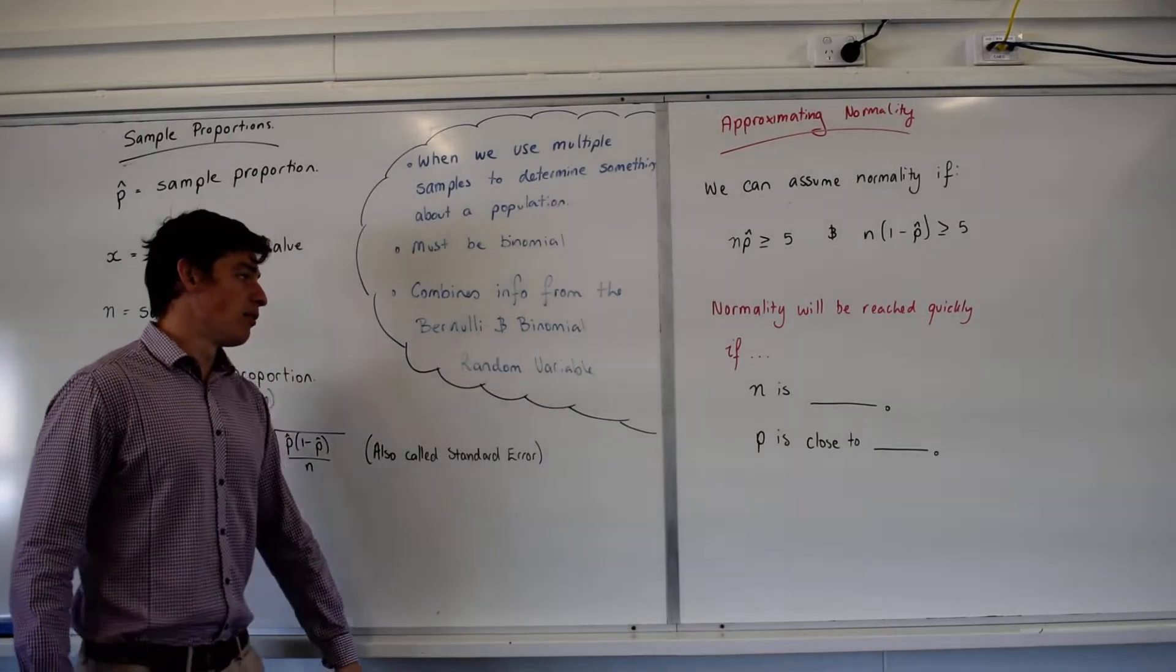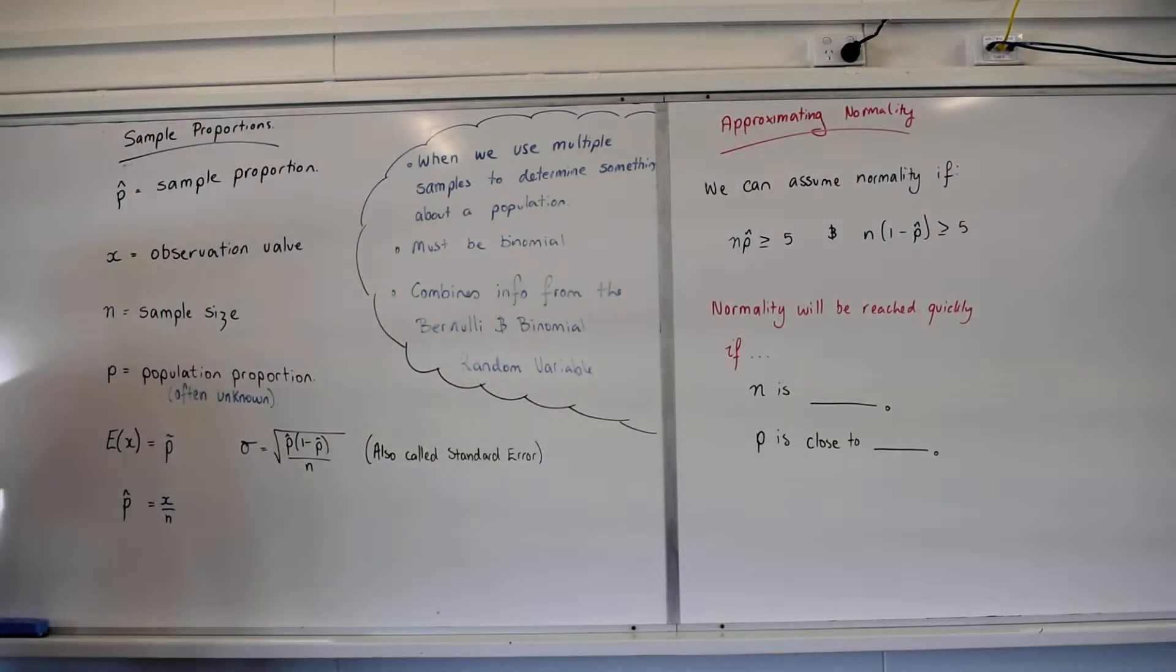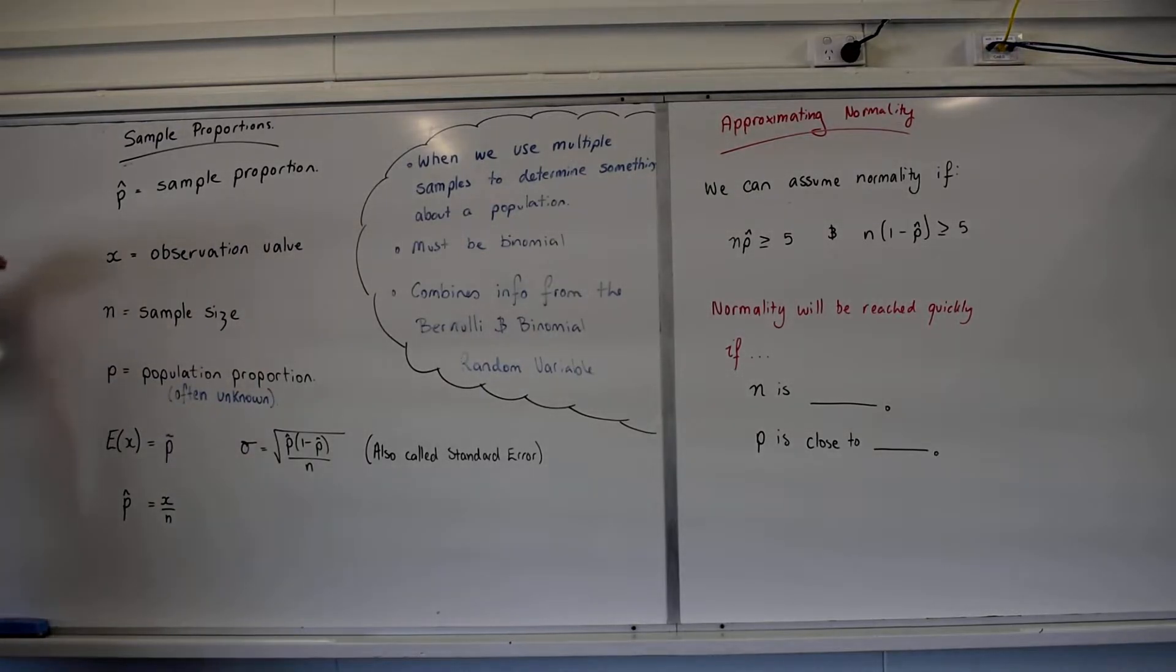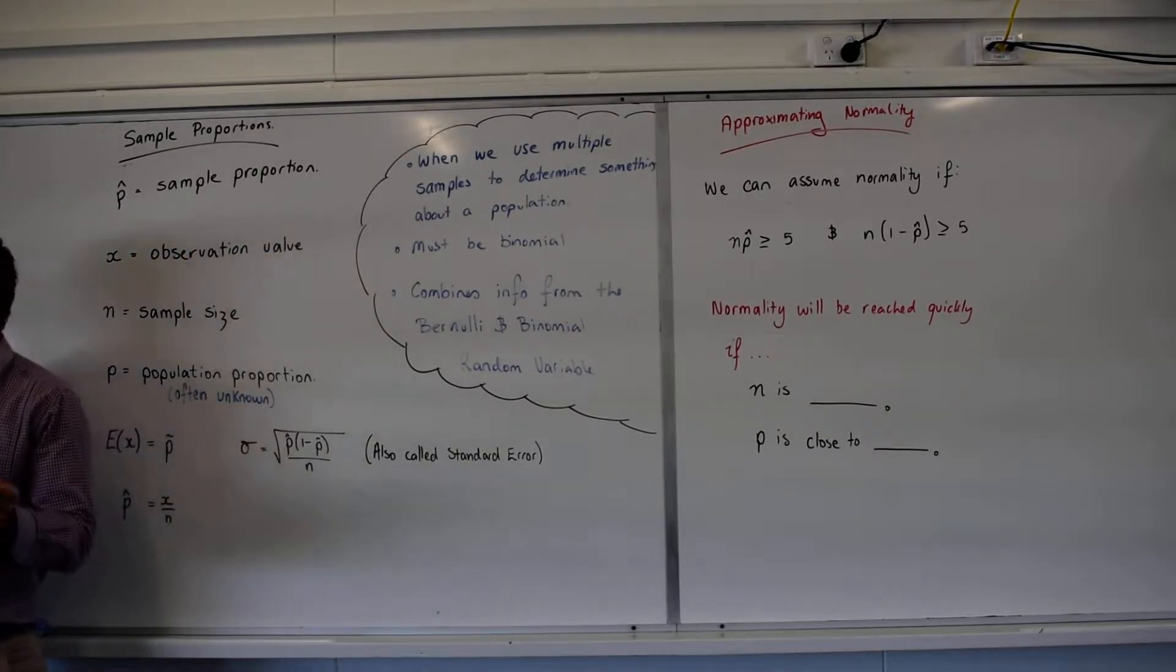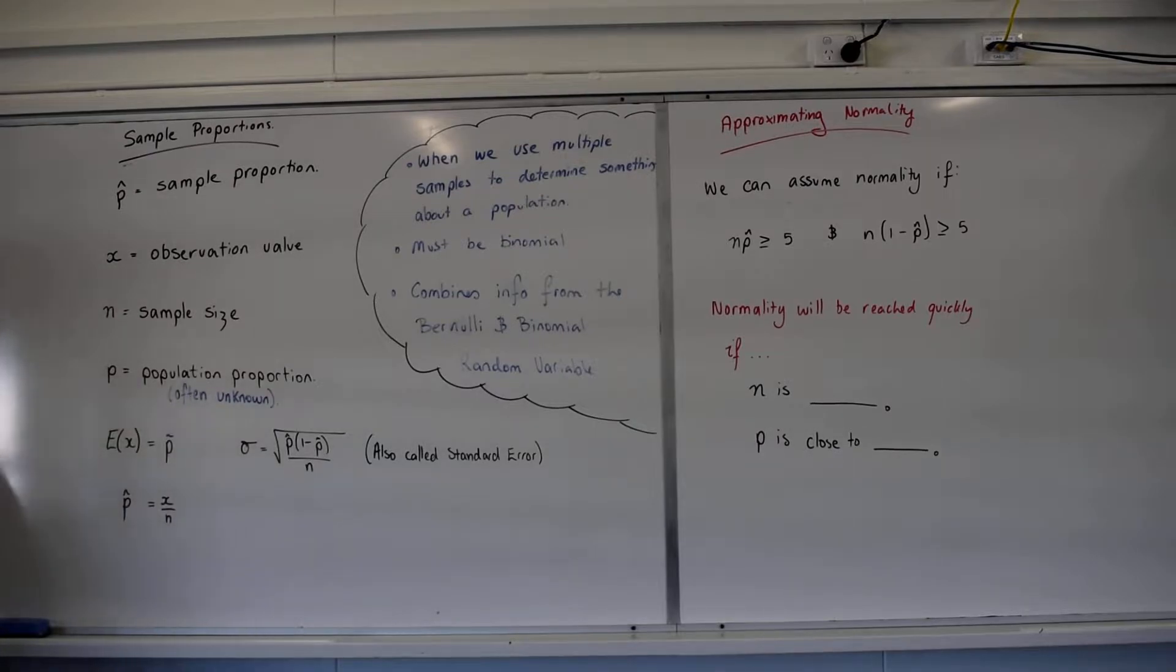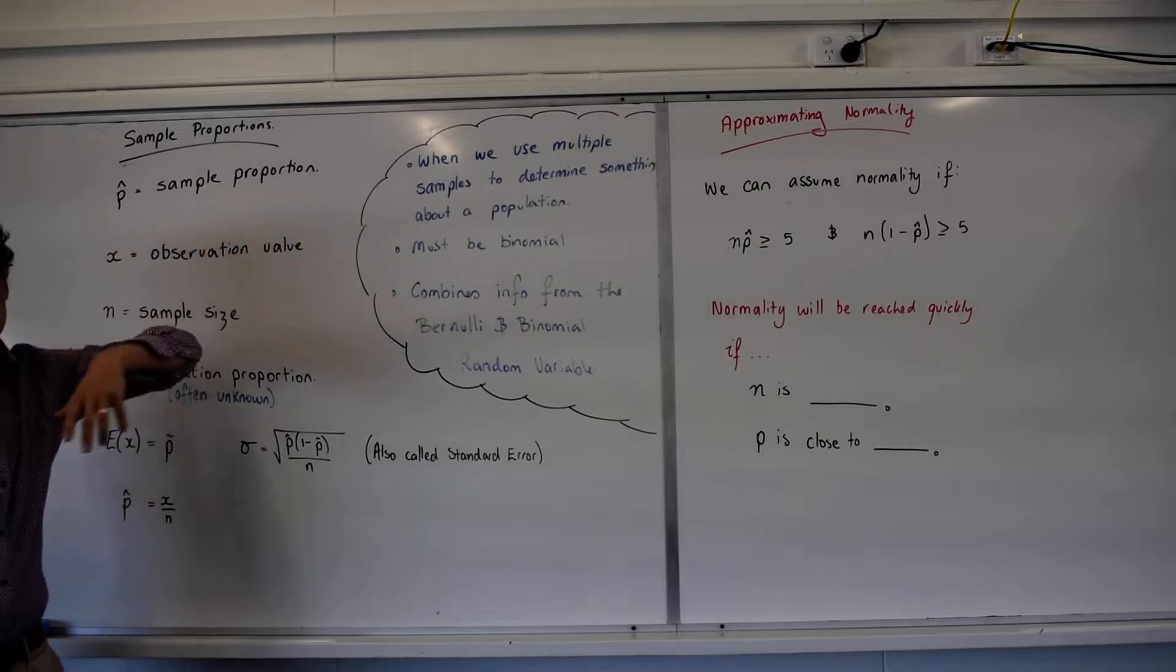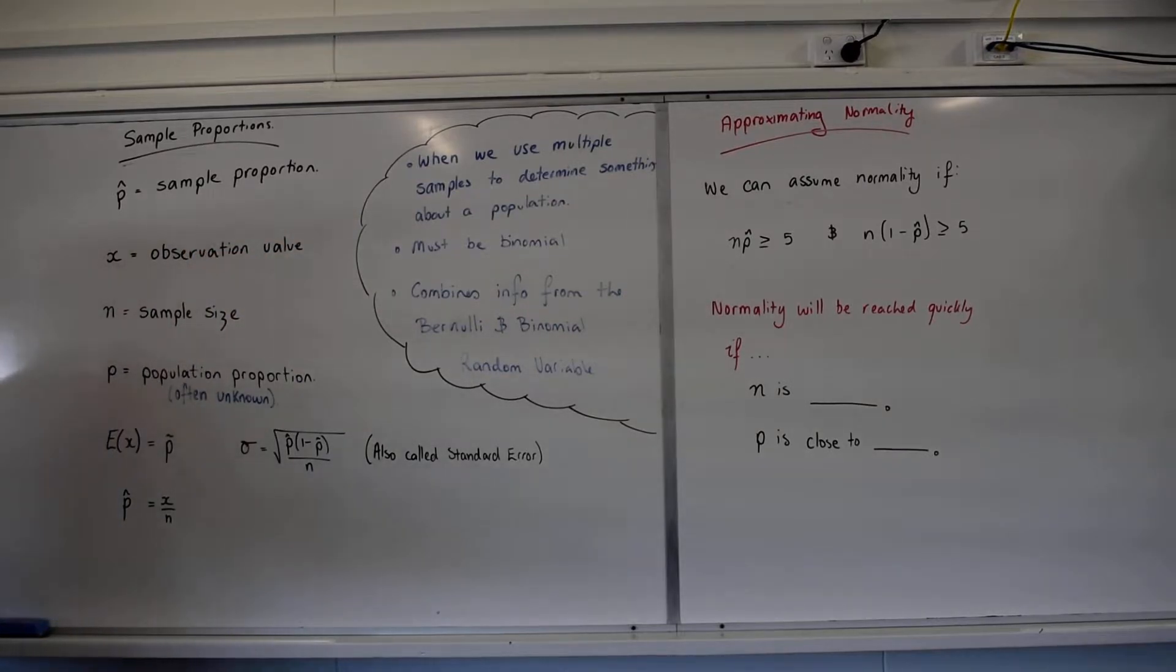It's linked very closely to the binomial random variables that we've looked at in the past, but these are the key pieces of information you need to take out of that. P hat, just be aware there's a P hat and P. P hat is our sample proportion, so it is saying what's the proportion of people in our sample that are successes.